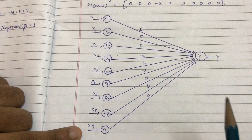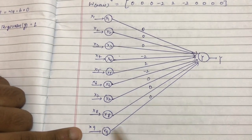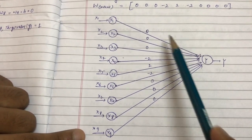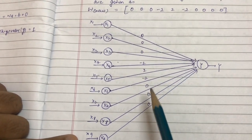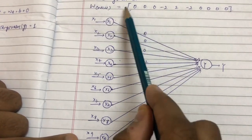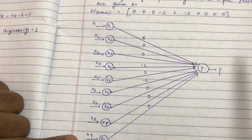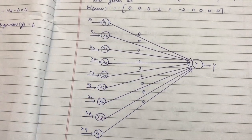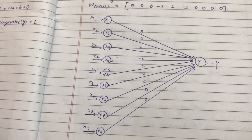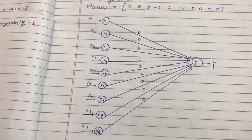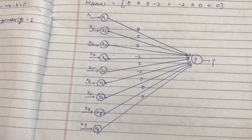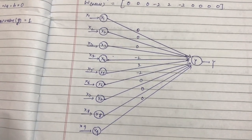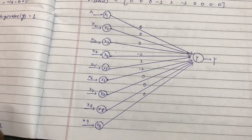Finally, we draw the Hebb network with input neurons x1 through x9 connected to the output neuron by the weights we obtained. This is the Hebb network after solving the entire equation. Thank you — please like, subscribe, and comment if you liked the video.